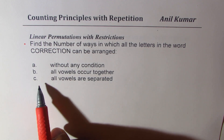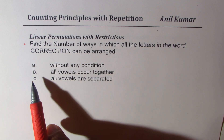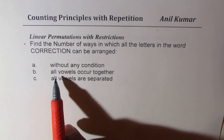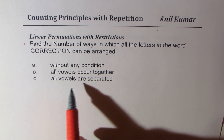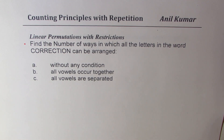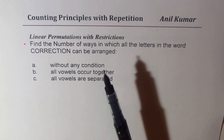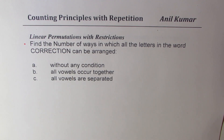We'll take up three different conditions. First one is without any condition. Then, all vowels occur together. And condition C is all vowels are separated. You can always pause the video, answer this question, and then look into my suggestions.